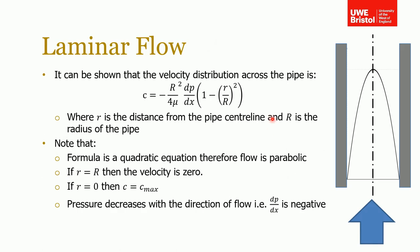Before I talk about the actual pressure loss for laminar flow, I just want to show that it can be shown, I haven't shown the proof here, that the velocity distribution across a pipe for laminar flow is given by this equation.